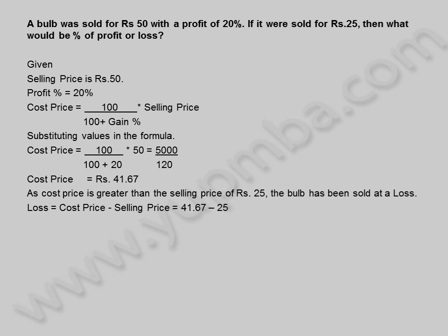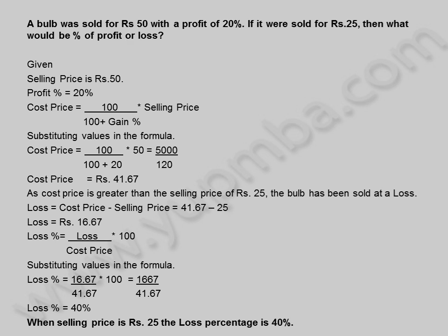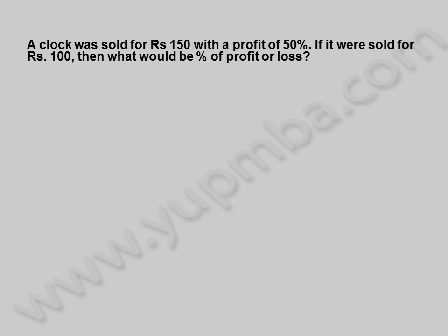Loss is equal to 41.67 minus 25, so loss equals 16.67 rupees. Loss percentage is equal to loss divided by cost price into 100. Substituting values: loss percentage is equal to 16.67 by 41.67 into 100, which equals 1667 by 41.67. Loss percentage is equal to 40%. When selling price is 25 rupees, the loss percentage is 40%.